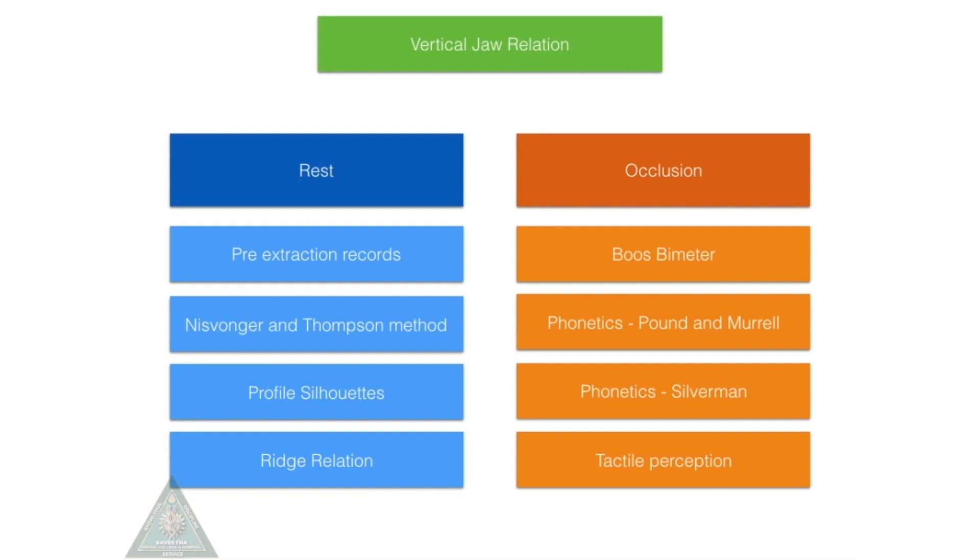Whereas if there is too little vertical dimension, you may get angular cheilitis and a very collapsed, ugly-looking appearance. So an optimal VD is necessary to have optimal aesthetics and a very good prosthetic outcome.